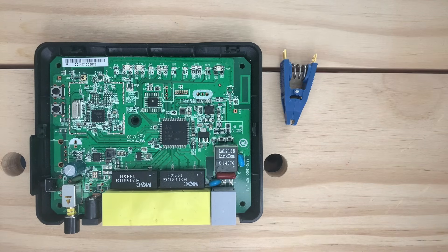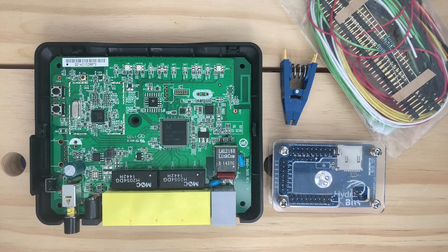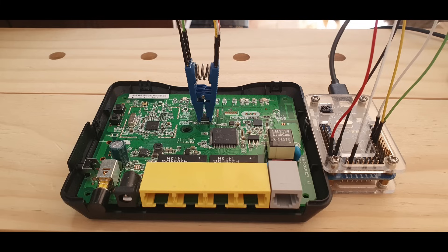What do we need? A clip, the HydraBus, and good quality cables. We have to match the pins on the chip to the breakout on the HydraBus. I'll be using SPI2 as it supports Serprog, which I'll use to dump the firmware. I'll also be providing 3.3V power to the target, so I have to wire the power and ground lines too.